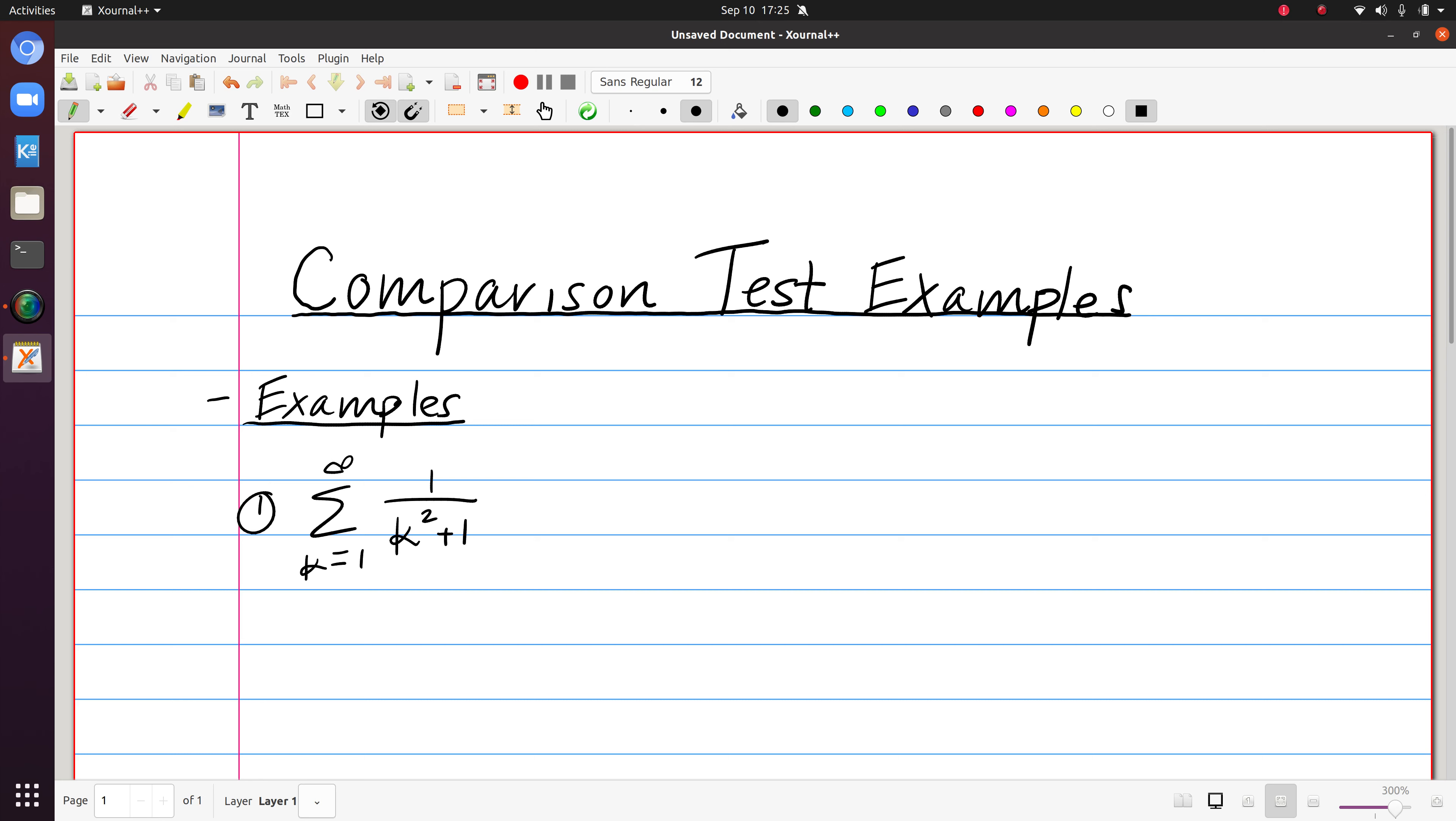In general, much of the time my instinct is to use the comparison test when I have a series that almost looks like a p-series or almost looks like a geometric series. So if you look at this one, this one almost looks like a p-series. And what I mean by that is I can see the terms of a p-series in here.